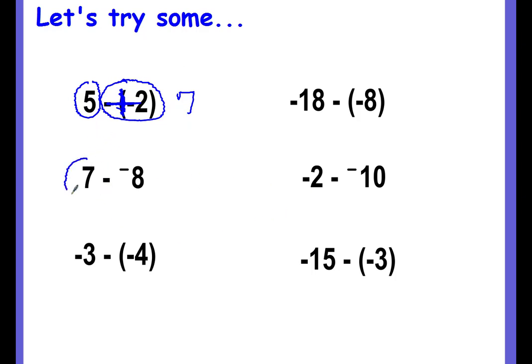Next one. We have a 7. Sometimes you're going to see the negative written kind of raised up like this. It's still a negative, so we still have a double negative here. So we want to circle both of them and turn it into a big plus sign. So now we have a positive 7 and a positive 8. Same signs. We add them up, keep the positive symbol, and the answer is 15.